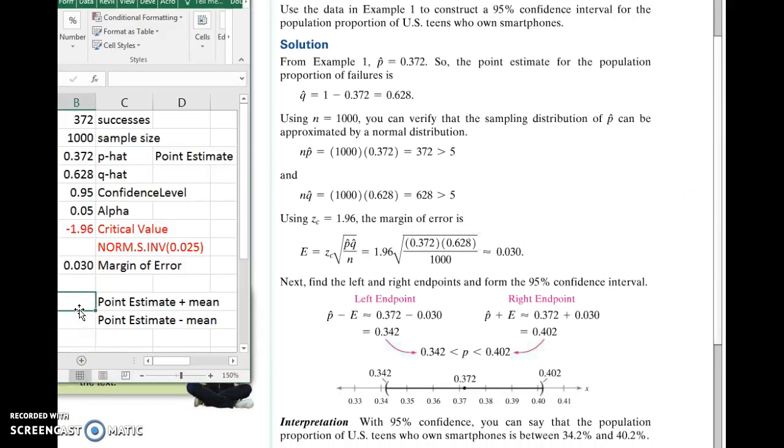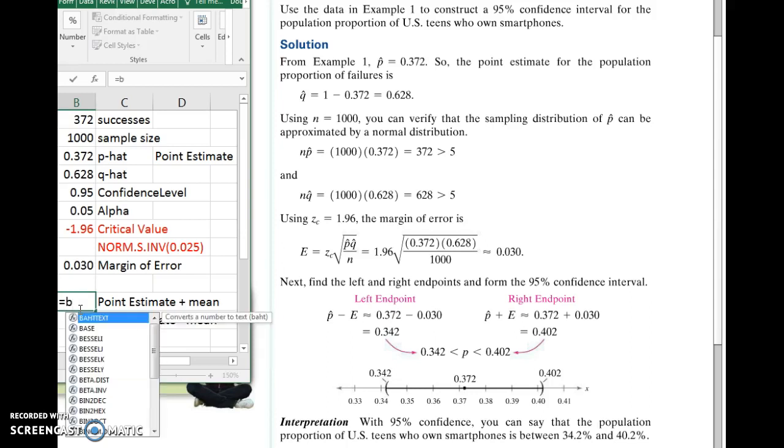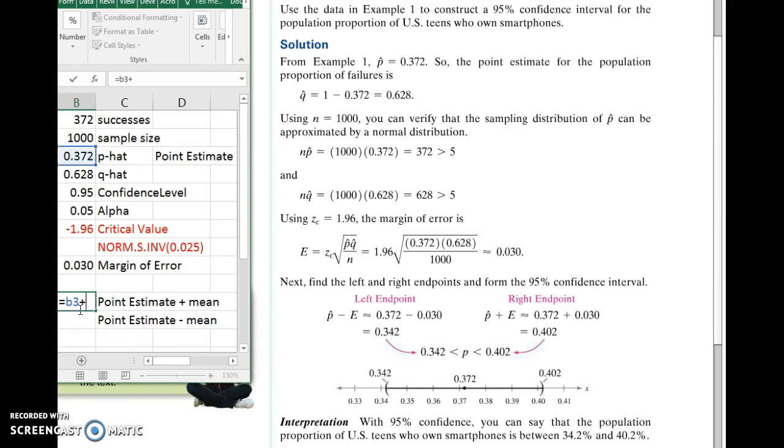To get our actual confidence interval, we take our point estimate, which is P hat, so equals, I'll use cell reference, equals B3 plus our margin of error. And then we do our point estimate minus our margin of error. And so that gives us the lower limit of our confidence interval and the upper limit of our confidence interval.